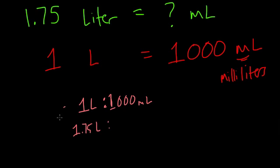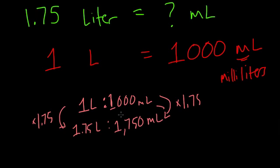What I've done is I've scaled up this number by 1.75. So I'm multiplying by 1.75. I would do the same here to keep the ratio constant, and I get what? Well, 1,000 times 1.75 is 1,750 milliliters, and that's your answer.